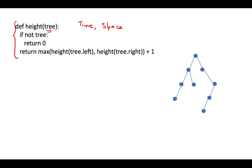What we do is that if we have a null node, then the height of it is zero. Otherwise, we take the height of the left and the right subtrees, take the max of those, and add one to it.